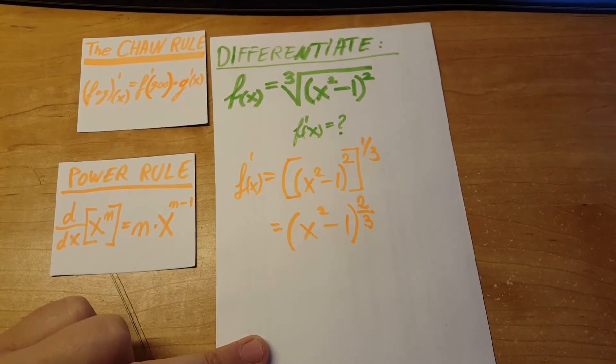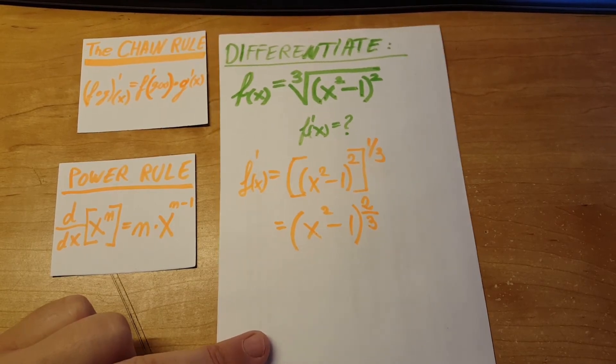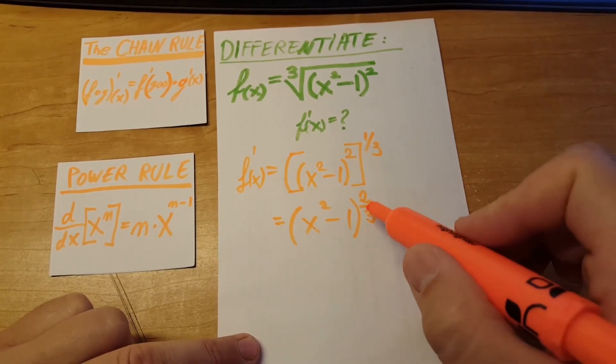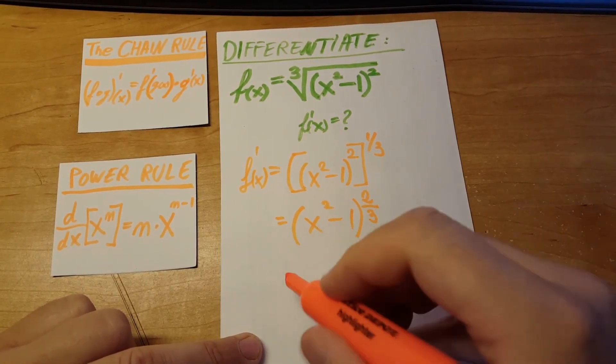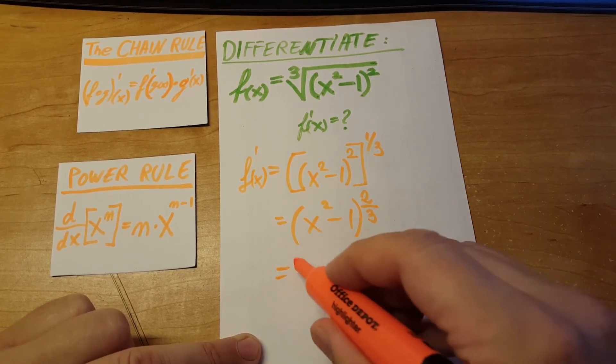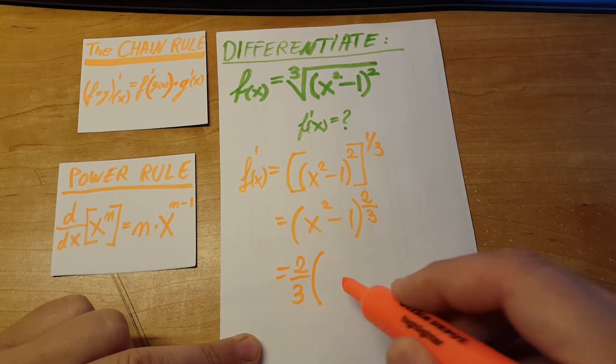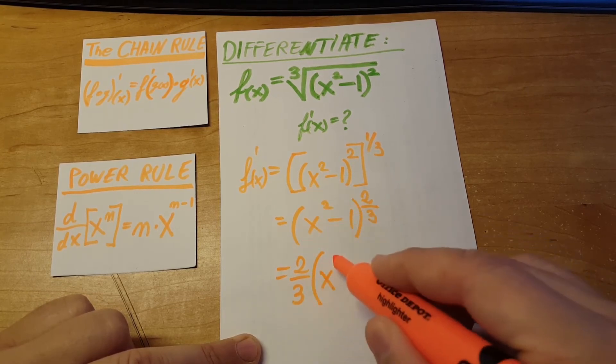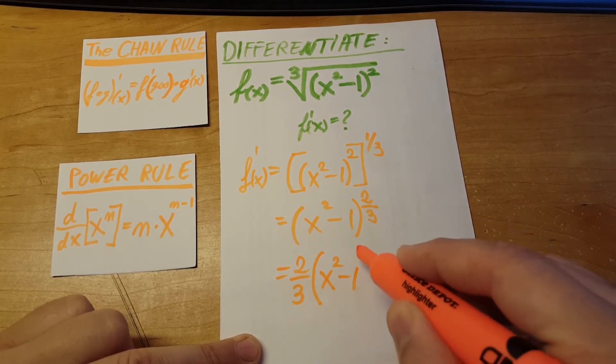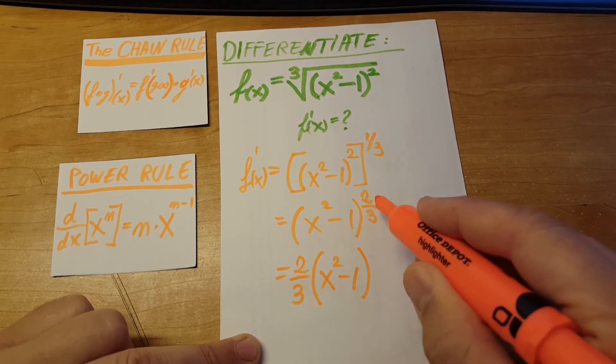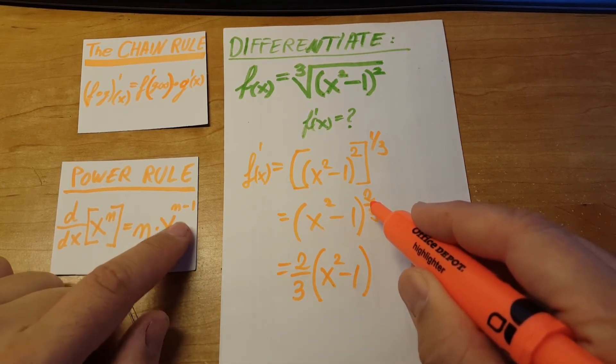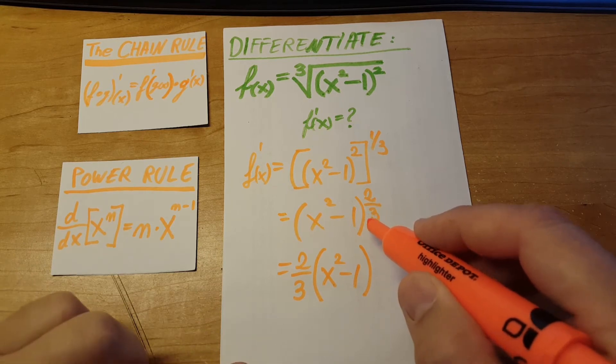Now we're going to get the chain rule and the power rule. So we're going to get this to the front. Two third multiplied by the inside, which we're not going to change right now. And two third minus one, just like the power rule says, n minus one.